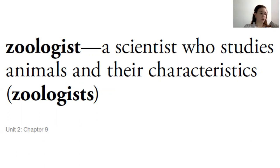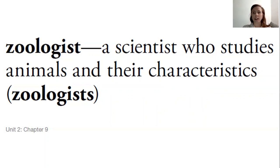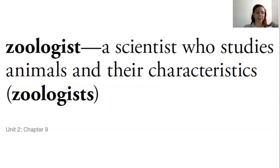Now that you have so much knowledge about different animals and their types of classification, you could be a junior zoologist in your own backyard or neighborhood. Remember, characteristics are the different things that we can describe about something. If you have a team of zoologists — more than one — you would add an S at the end to make it plural. You can also pause and make a little sketch to help you remember what a zoologist is.